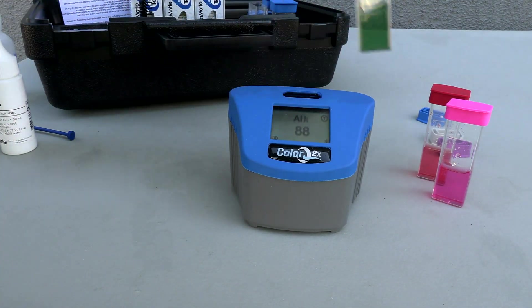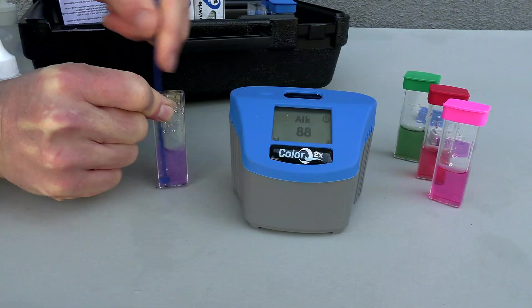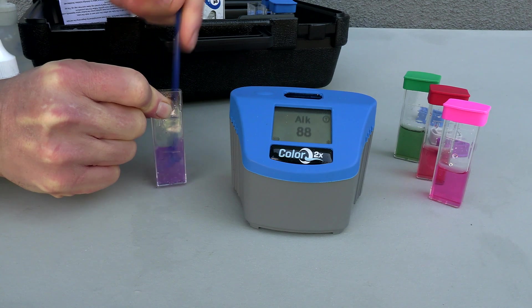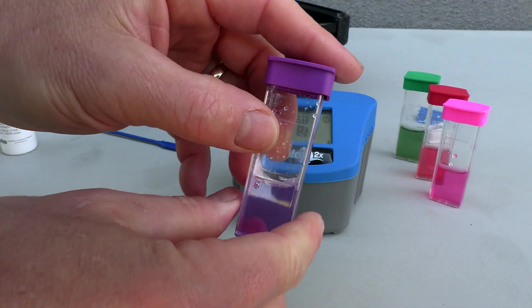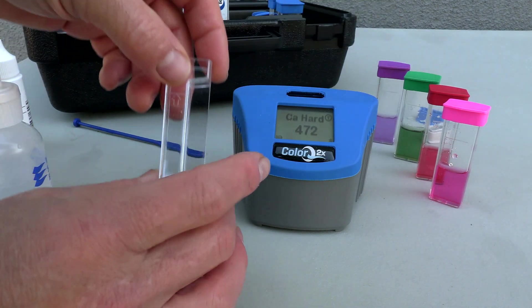Next I'm going to do the calcium hardness and we're going to use another test tab. You're going to put the purple cap on top. The calcium hardness is 472.